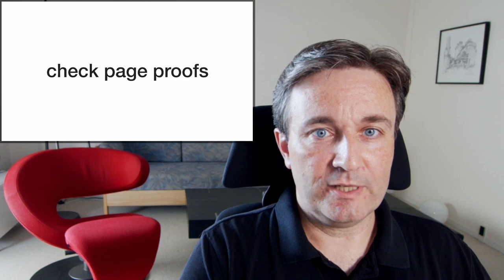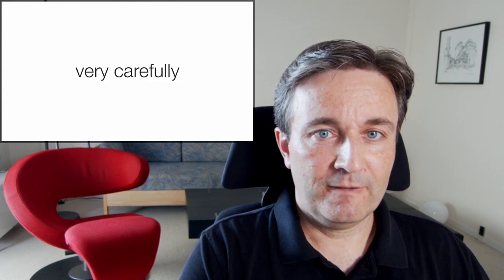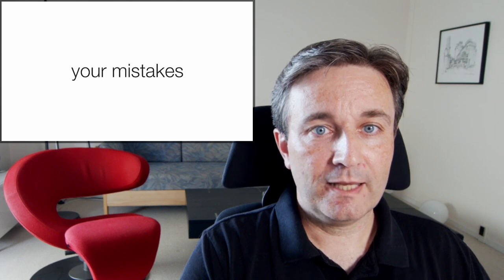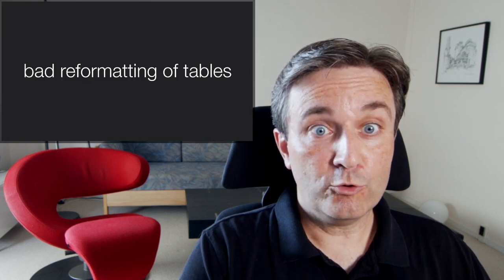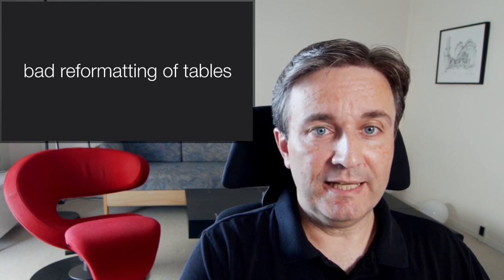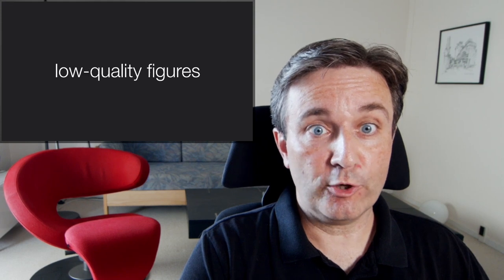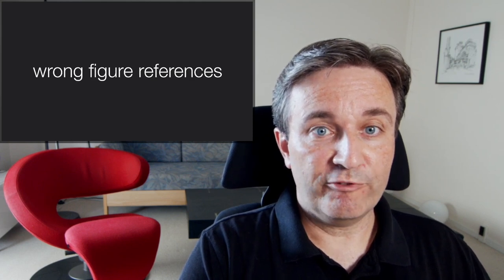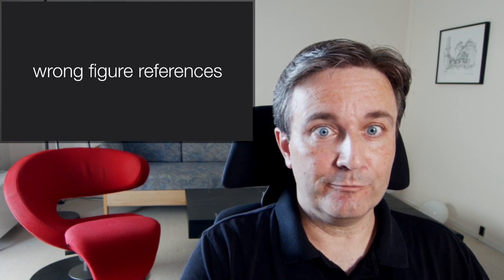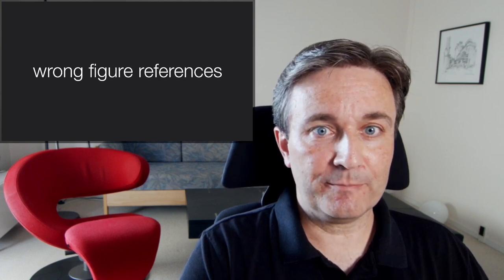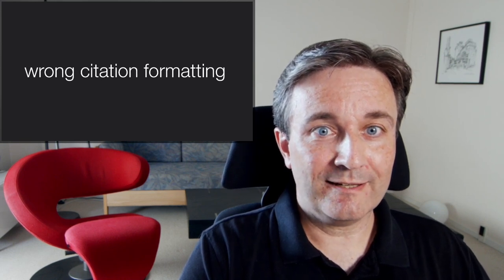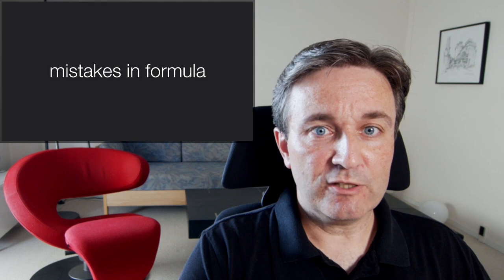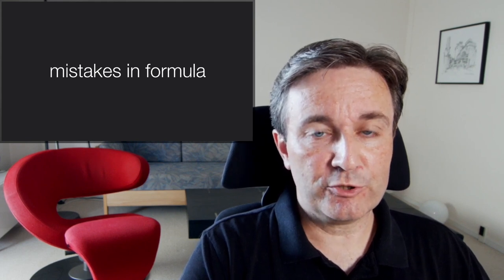Shortly after your paper has been formally accepted, you will typically receive page proofs, and you need to check these very carefully. This is your last chance to fix mistakes — both the publisher's mistakes and your mistakes. The publisher may do bad reformatting of tables; I've seen that many times where complex tables get formatted wrong. You can have low-quality figures where the resolution is really bad. You can have wrong figure references, typically made by yourself when you were responding to reviewers or shortening the paper. Wrong citation formatting — often you use a citation manager and forget to look at the actual reference list to make sure everything looks right. And mistakes in formulas, again something often introduced by publishers when they're typesetting the manuscript.